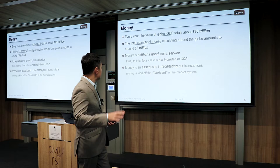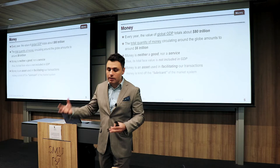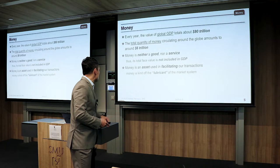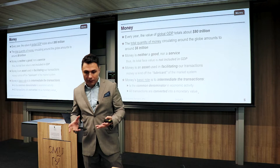Money is a lubricant of the system — its basic role is to intermediate transactions. What it does is break transactions into two parts.